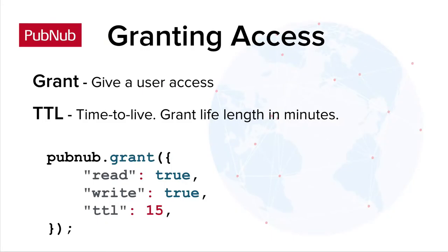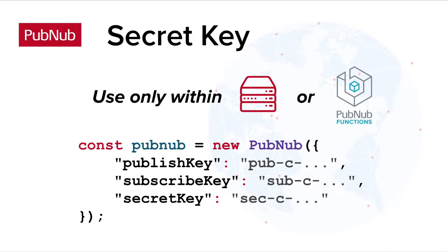As your app's administrator, you need to be the one who grants and restricts usage for your clients. This can be done using the SDK's grant method. Grants are only possible if the client connects to PubNub using the secret key. The secret key is added alongside the publish and subscribe key when you initialize PubNub in JavaScript. Make sure that you only include the secret key in your secure server's instance of PubNub, or in PubNub Functions' serverless environment.